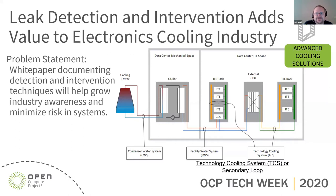For this paper, we're looking at leak detection at the facility level — end-of-row CDUs, cooling racks, and in-rack CDUs — and the different pathways fluid takes all the way to the component. That's the level we're examining for leak detection and intervention.